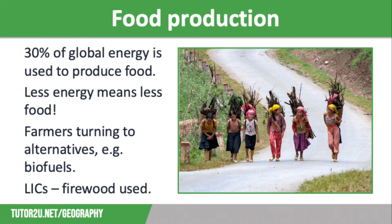Some farmers have recently opted for alternatives to expensive fossil fuels, for example by using biofuels. However, this still makes food production costly and food prices have increased as a result. In many LICs, firewood is the main source of energy, and often people have to walk miles to collect it — like the people in the boat collecting firewood in Vietnam to cook with. This means they spend less time farming, which again affects food security.